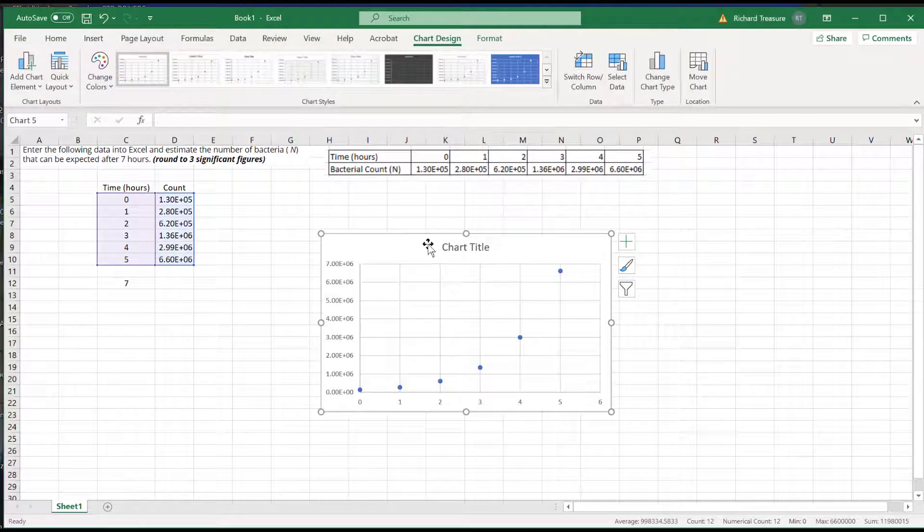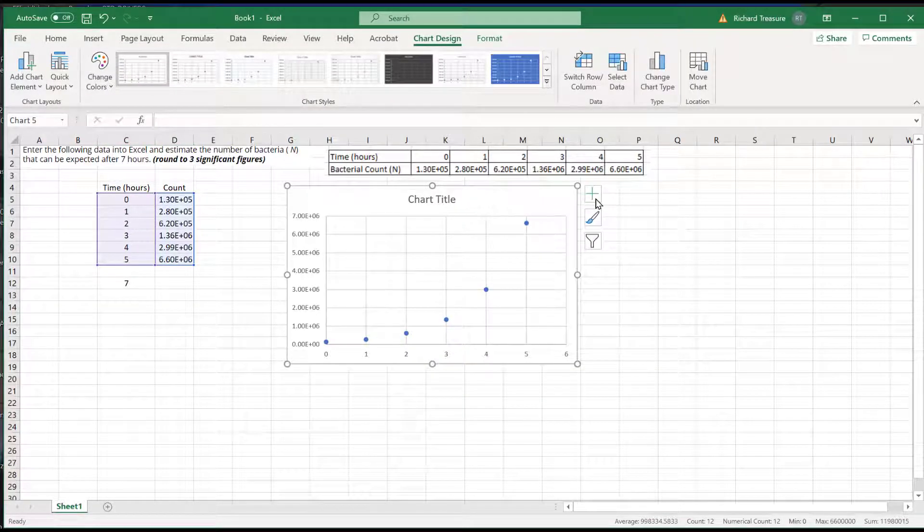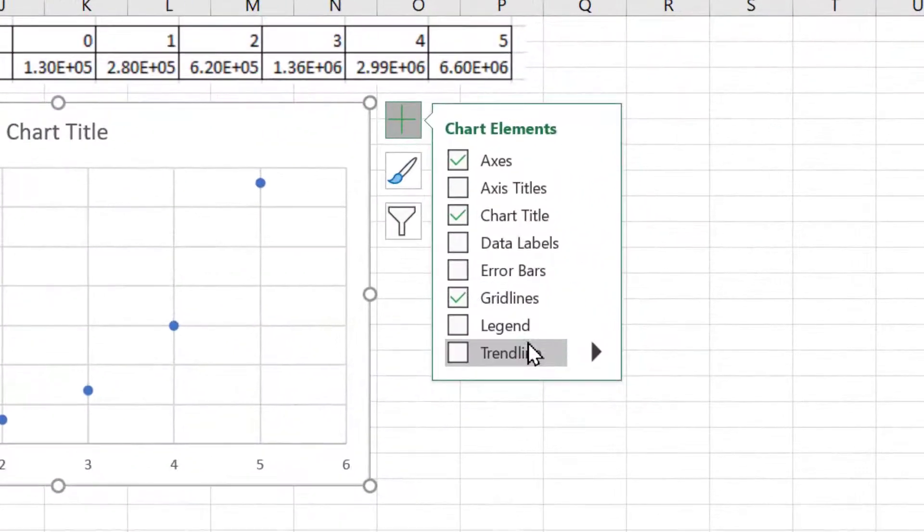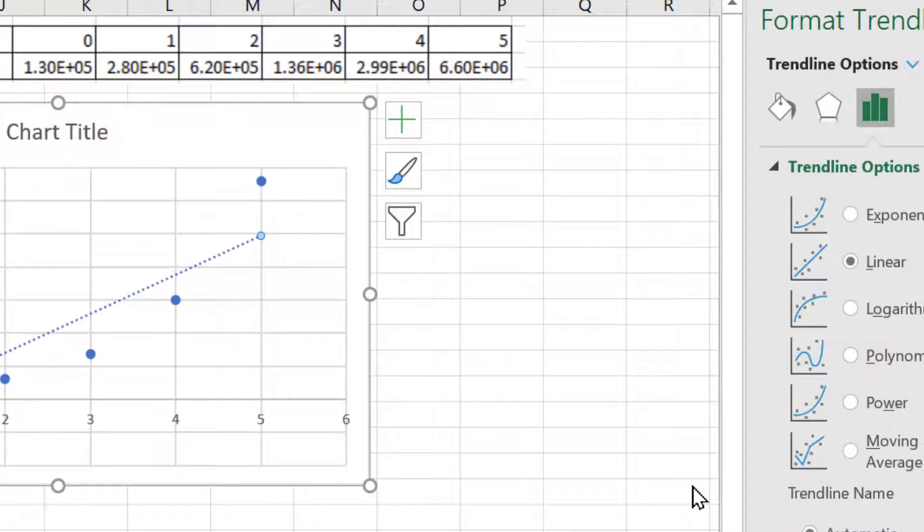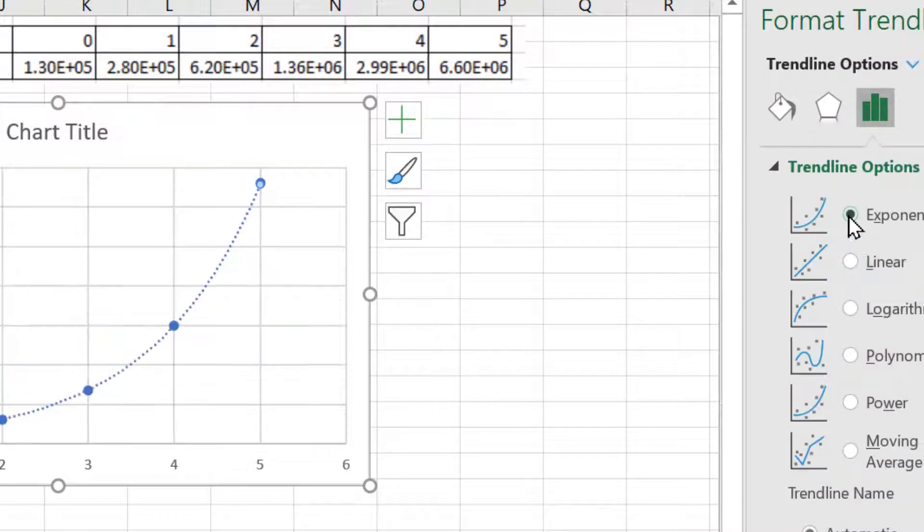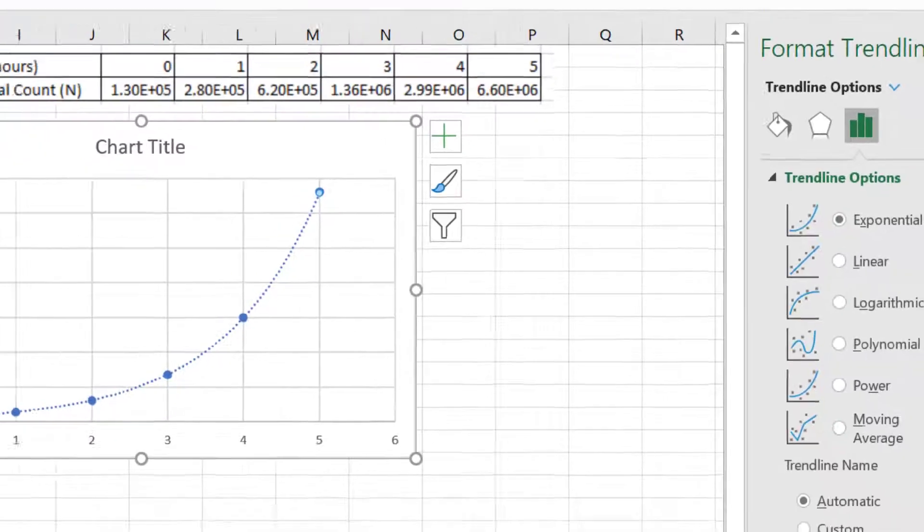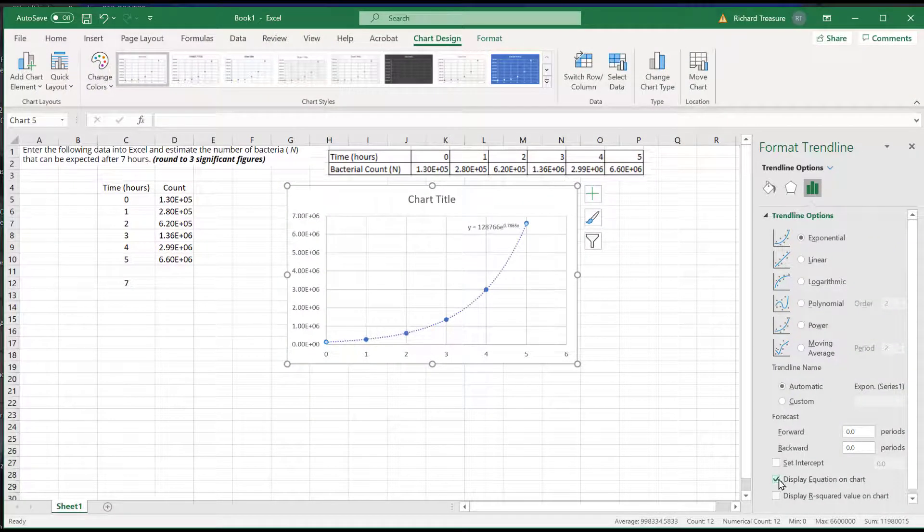Then go to the add trendline option. In more options, I can choose exponential. And then down the bottom, display equation on chart.